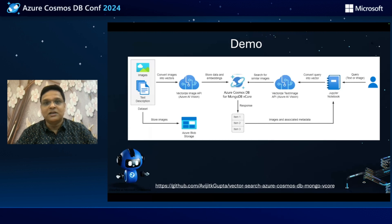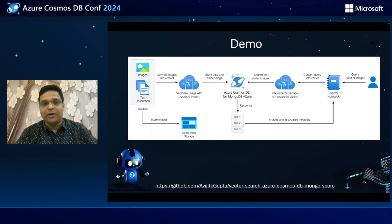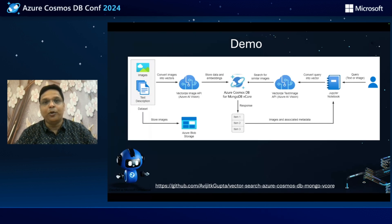Phase one involves generating and computing the embeddings using the Azure AI Vision resource. Effectively, we are using the Azure AI Vision resource to convert all our input images from our dataset into a vector embedding, and we are storing metadata along with this vector into a CSV file locally. In phase two, we are using this generated CSV for uploading the data to our Azure Cosmos DB for MongoDB vCore collection.